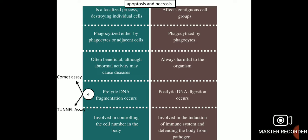Apoptosis is a localized process destroying individual cells, whereas necrosis affects contiguous cell groups. In apoptosis, cells are phagocytized by phagocytes or adjacent cells; in necrosis, only phagocytes are involved. Apoptosis is often beneficial, though abnormal activity may cause disease, whereas necrosis is always harmful. Apoptosis involves pre-lytic DNA fragmentation; necrosis involves post-lytic DNA fragmentation. Apoptosis controls cell number; necrosis induces immune system activation to defend against pathogens.